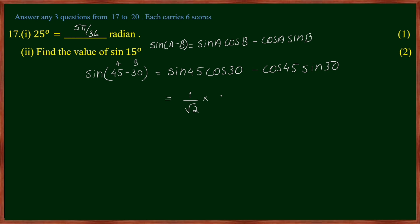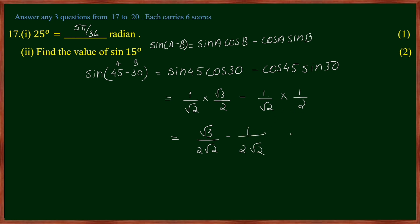Cos 30° is √3/2, sin 45° is 1/√2, cos 45° is 1/√2, sin 30° is 1/2. So we get (1/√2)(√3/2) minus (1/√2)(1/2), which gives √3 by 2√2 minus 1 by 2√2. Under the same denominator 2√2, the answer is (√3 - 1) by 2√2.